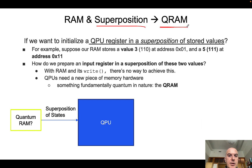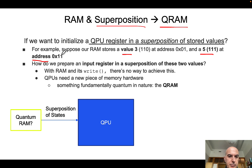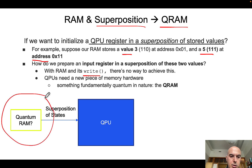So what we are really interested in in this lecture is to see if we can develop a RAM that allows us to store also superposition of states. This is what we are going to call the QRAM. For instance, we want to store the value of 3 and the value of 5 using just one address. In a classical case using the RAM and the subsequent write operation, there is no real way to achieve this. So we need a new piece of hardware: our QRAM.